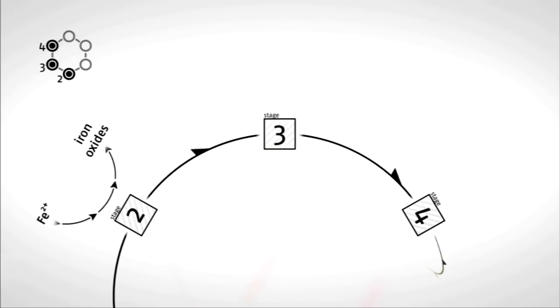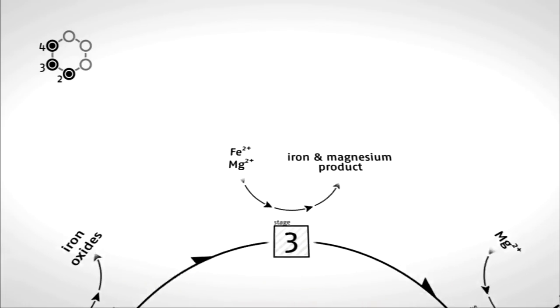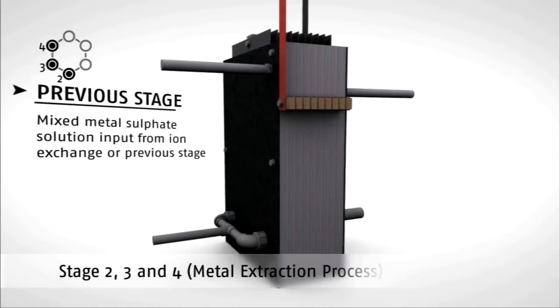Returning to the Barrier Bay process, the drained PLS from the ion exchange columns is sent onto stages 2, 3 and 4. During these stages, the iron and magnesium are extracted from the PLS, resulting in further recovery of acid and water.